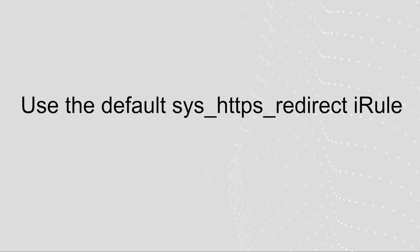You can configure your HTTP virtual server to redirect traffic to an HTTPS virtual server using the default Sys HTTPS redirect iRule that comes loaded on the BIG-IP system. This iRule offers basic HTTPS redirect functionality. If your environment requires more advanced HTTPS redirect functionality, you can use the default iRule code and adapt it to suit your needs. To use the default Sys HTTPS redirect iRule, do the following.